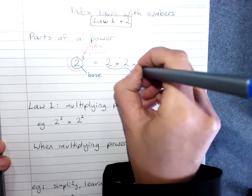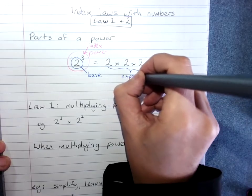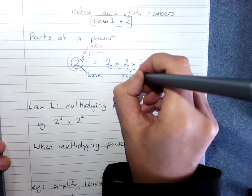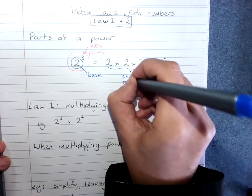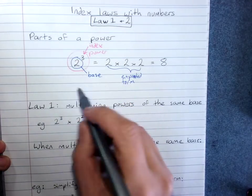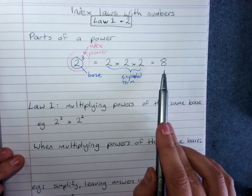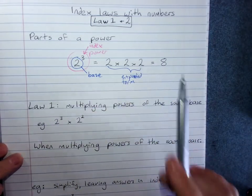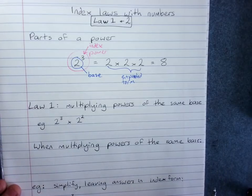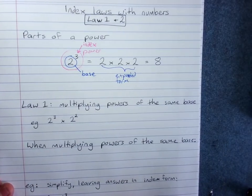As you know, this is expanded form. This is index form, when we write it as a power. And this is the evaluated form, the answer. So the index laws are about finding shortcuts for when we're dealing with powers.